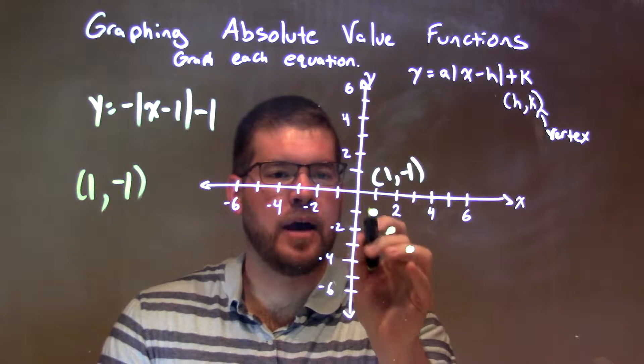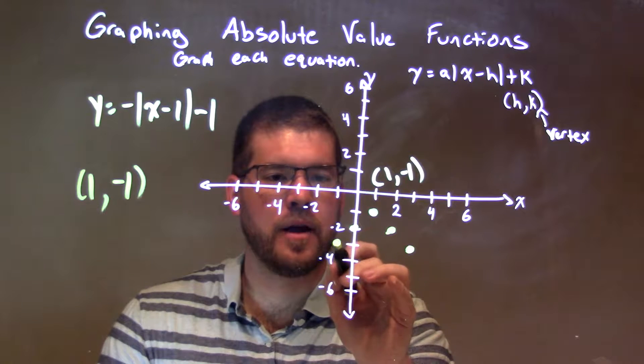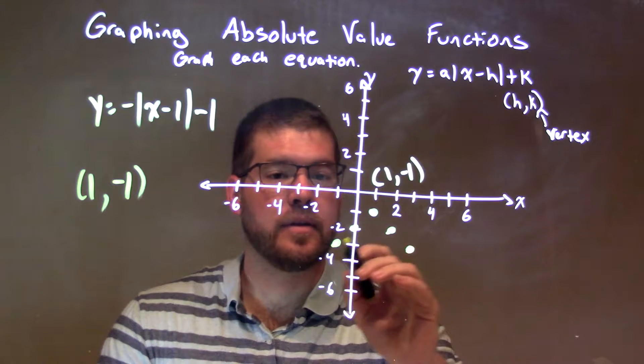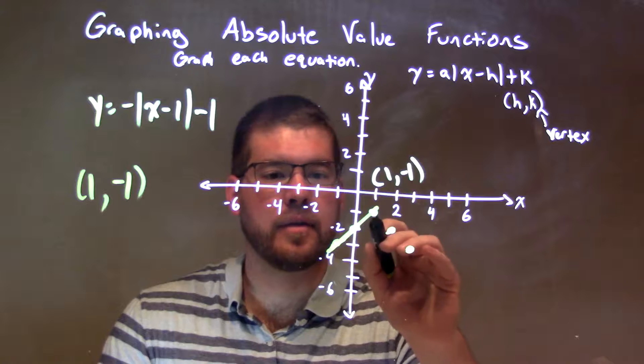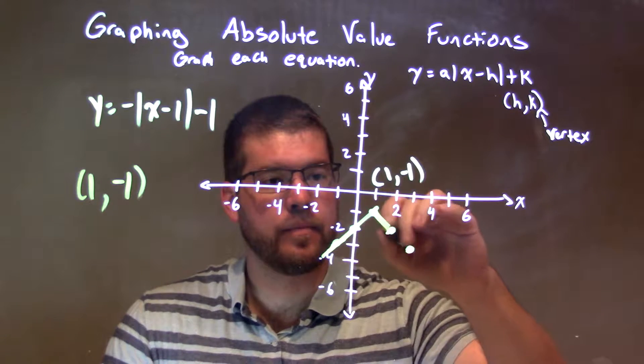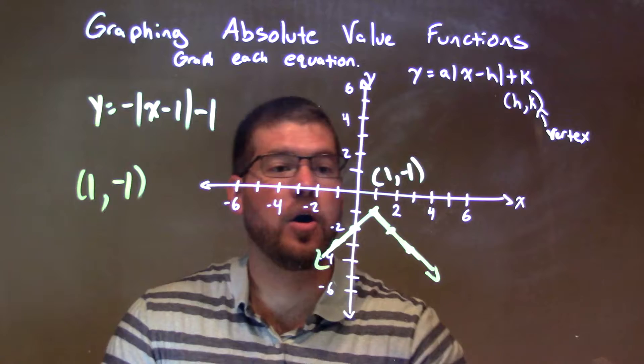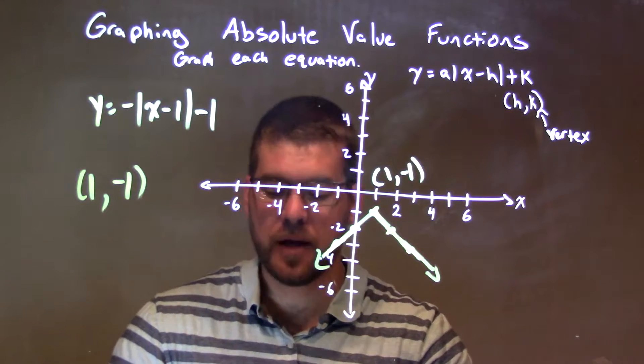And then we mirror that to the left, down 1 to the left 1, down 1 to the left 1. We connect the dots, connect the dots right here, make our V-shape, and there we have our graph and our final answer.